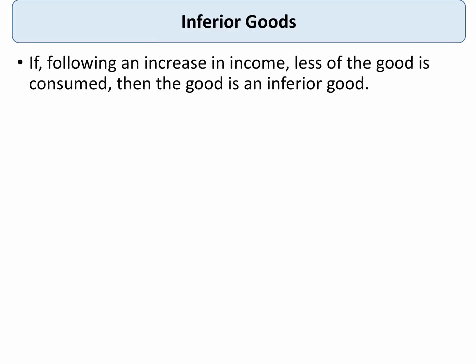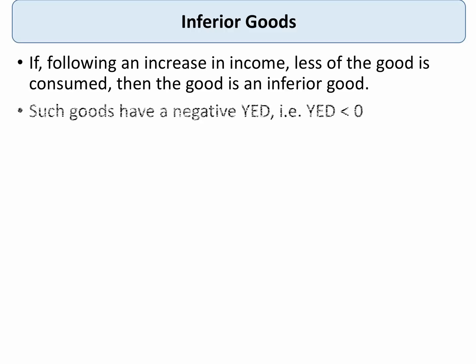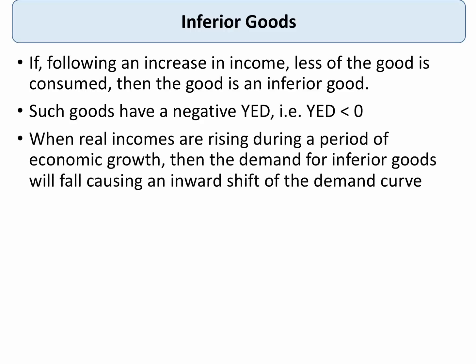Inferior goods: this is when a rise in income leads to a fall in demand. So if incomes go up and people buy less, we have an income elasticity of less than zero and the good is categorized as an inferior good. Typically inferior goods and services exist where superior goods are available if the consumer has the money to buy them. So if we see a rise in income as the economy recovers from recession, the demand curve for inferior goods will tend to shift inwards.